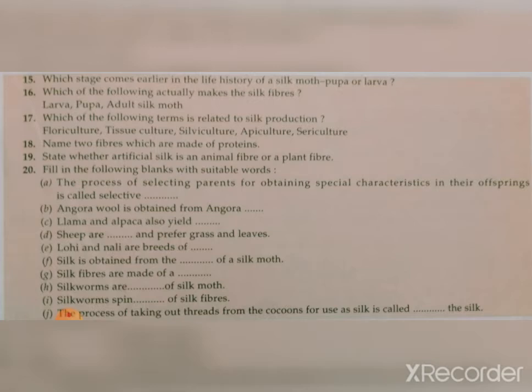Question twenty — fill in the blanks: The process of selecting parents for obtaining special characteristics in their offspring is called selective breeding. Angora wool is obtained from Angora goats. Llama and alpaca also yield wool. Sheep are herbivores and prefer grass and leaves. Lohi and Nali are breeds of sheep.